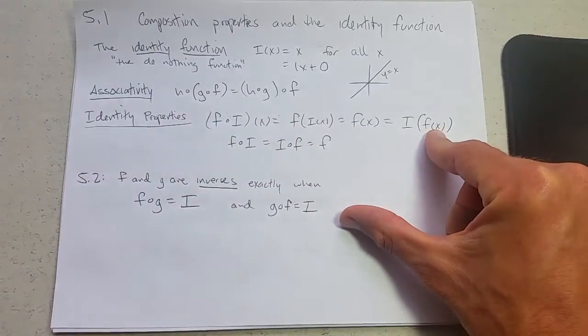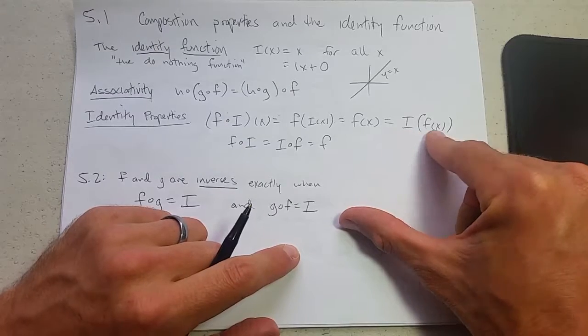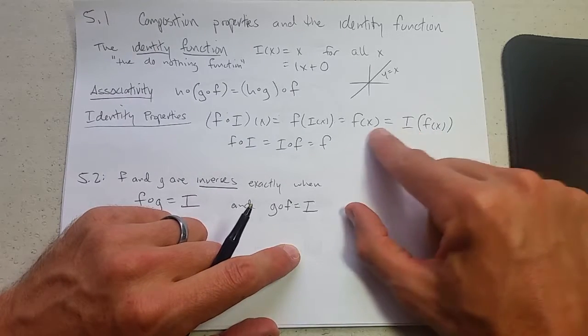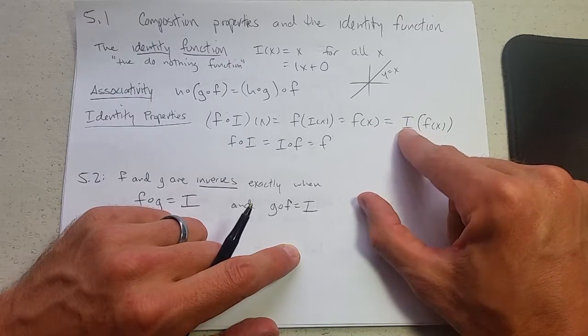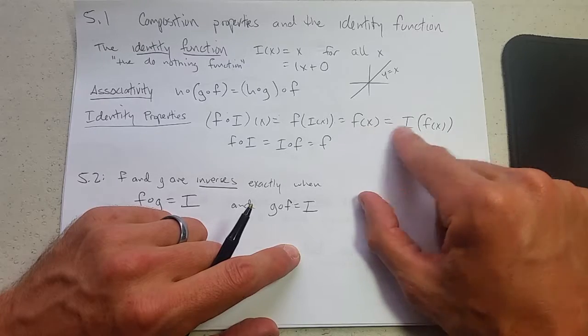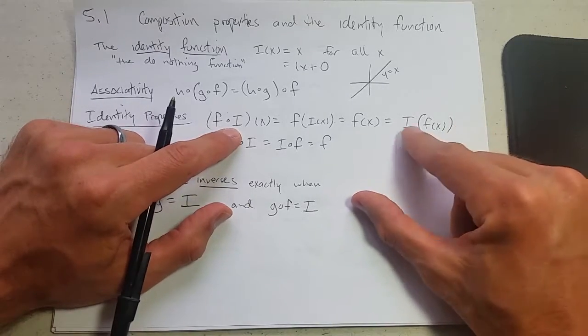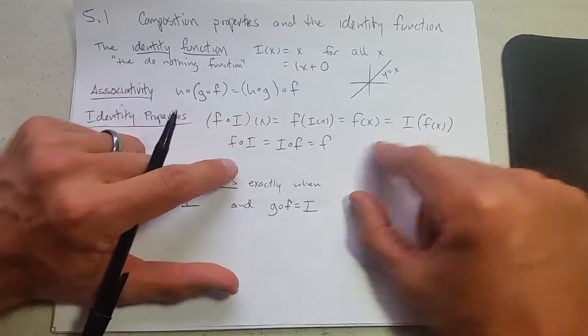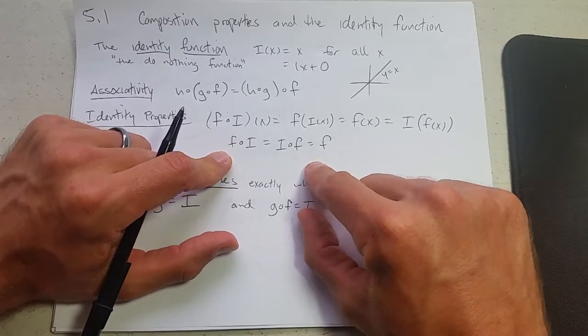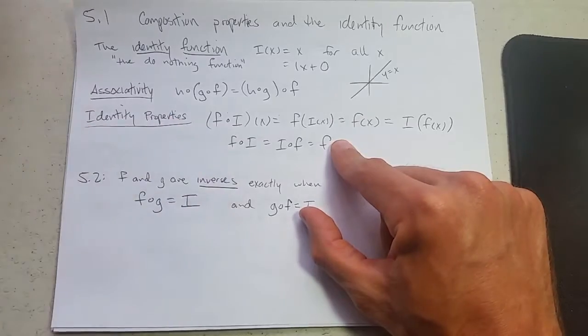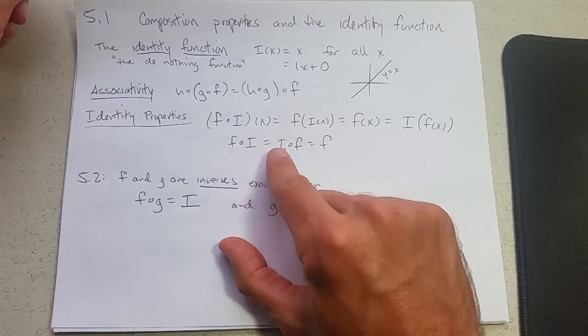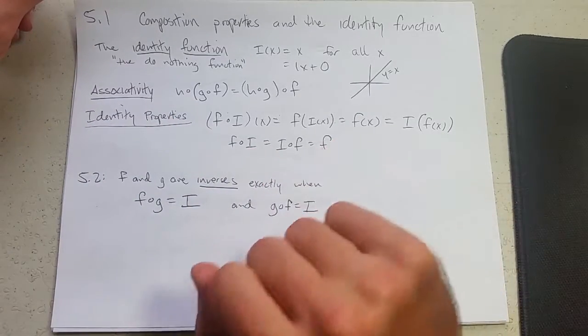And what does I do to f of x? It doesn't do anything. So I can apply the I function, the identity function, to anything and it won't change it. So this is f of the identity equals the identity of f. You can see that written right here, or you could of course just write f itself. So composing with the identity, either side, doesn't change f.